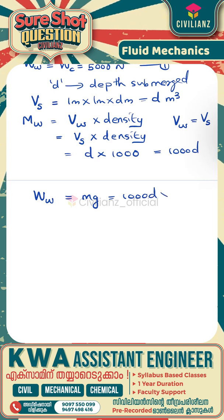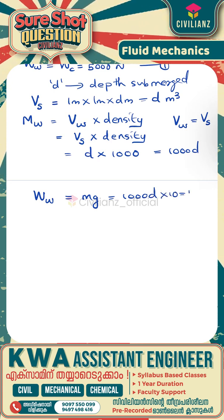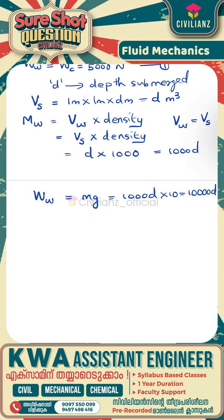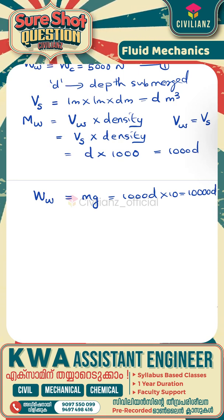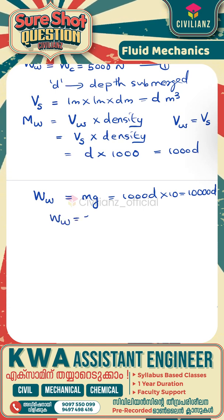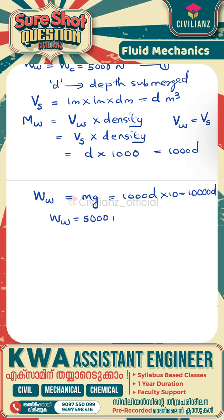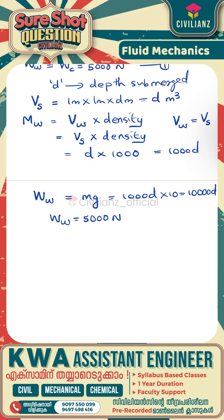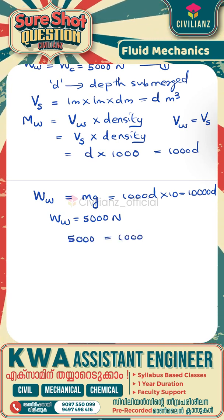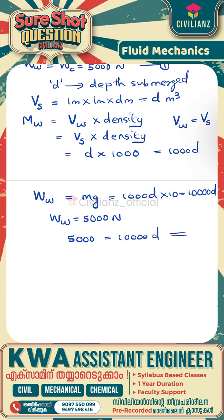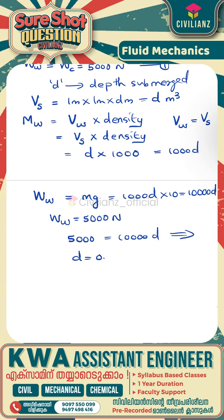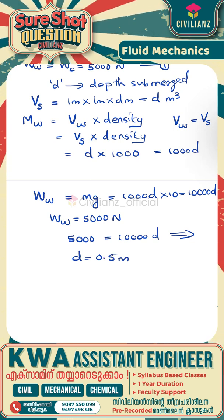Weight of water displaced will be equal to mass into acceleration due to gravity, so 1000D multiplied by 10 gives 10000D. From equation number 1, the weight of water displaced is 5000 newton, so equating: 5000 is equal to 10000D, which means the depth of the portion of the cube submerged will be equal to 0.5 meter.